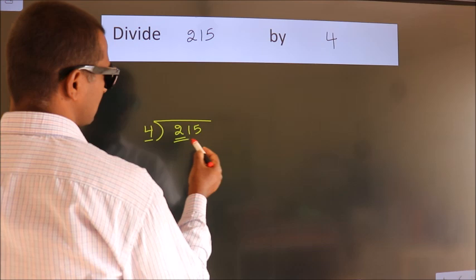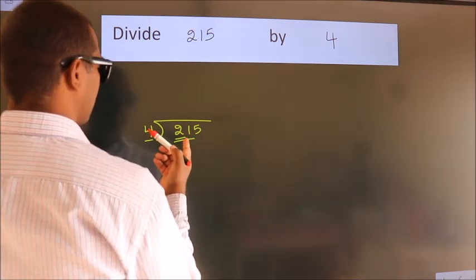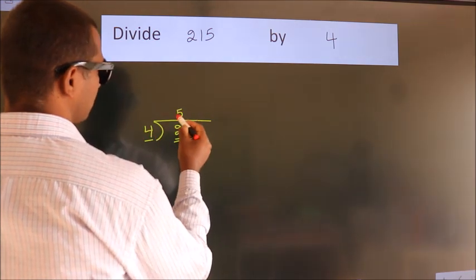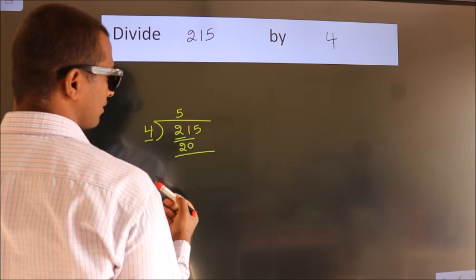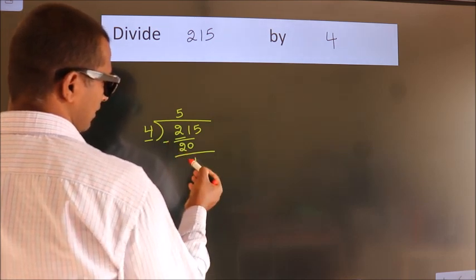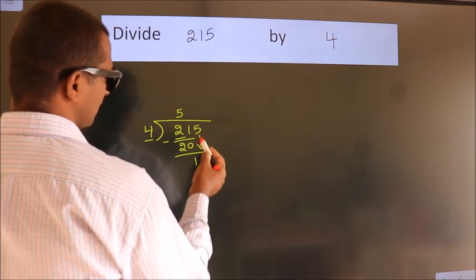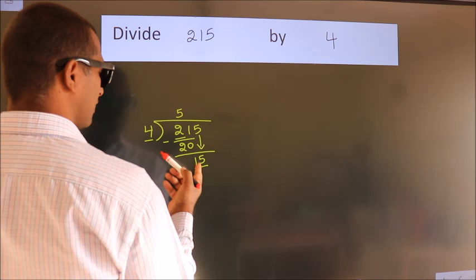So we should take two numbers: 21. A number close to 21 in the 4 table is 4 fives, 20. Now we should subtract. We get 1. After this, bring down the next number, so 5 comes down. So 15.